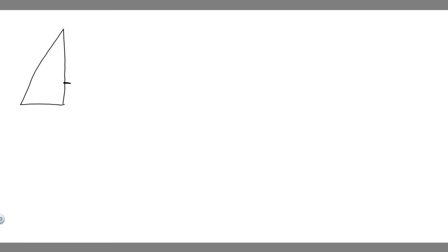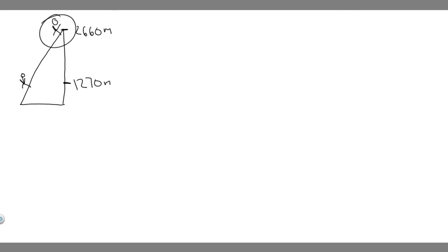Before we solve it, let's draw what's going on. This right here is going to be the hill or the mountain that they're climbing. This is where the hiker starts, at 1,270 meters, and they're going to climb all the way up to the peak, which is 2,660 meters. The hiker ends here at the top. So that's our drawing — let's go ahead and solve.